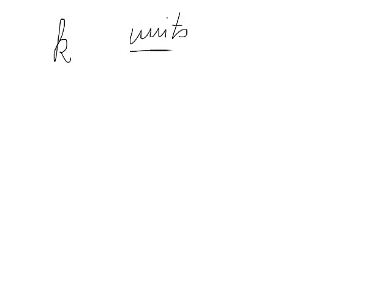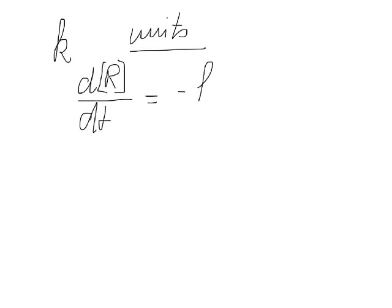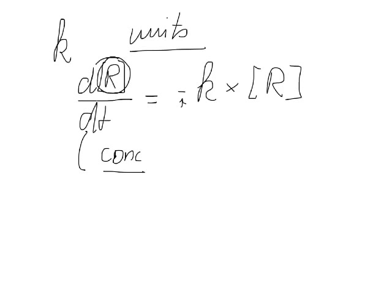Let us quickly explore the units for the rate constant k. We can do that very easily by looking at the units of the rate equation. We said that dR — the changing concentration per time — equals minus k times the concentration of the reactant. We don't have to worry about the negative sign here because that doesn't contribute to the unit. So this side has units of concentration divided by time.